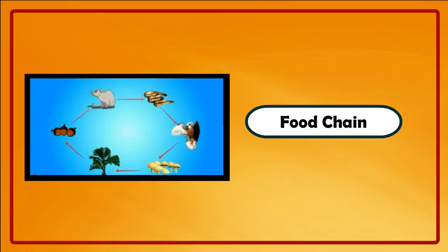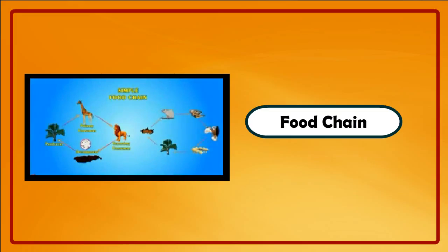For example, grass makes food in the presence of sunlight and is eaten by zebra. The zebra is eaten by a lion. When the lion dies, it decomposes and gives nutrients to plants. Similarly, algae is eaten by small fish, and small fish are eaten by big fish.